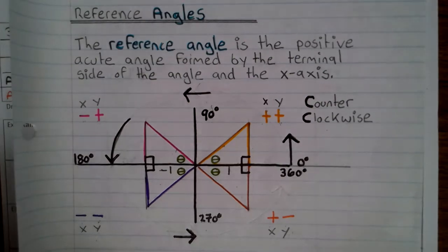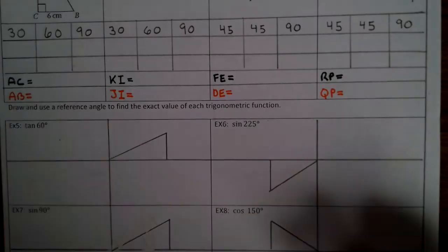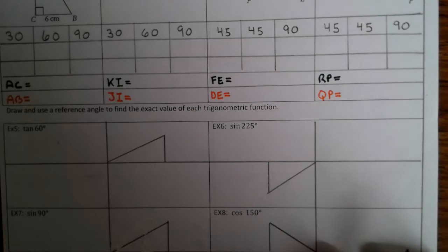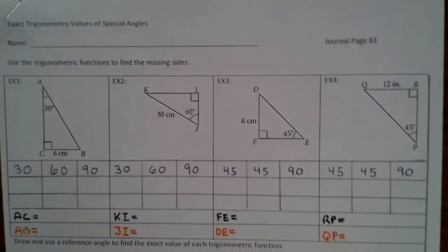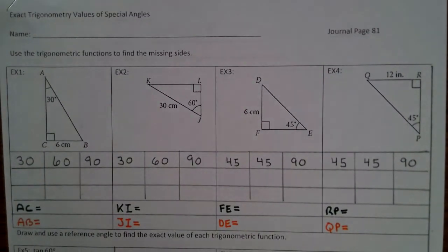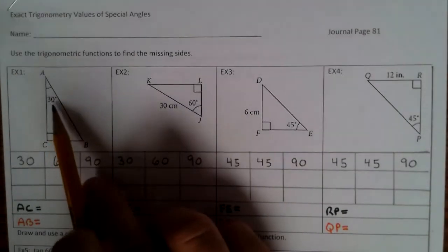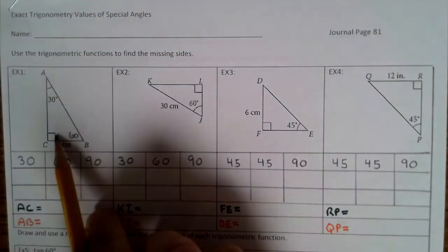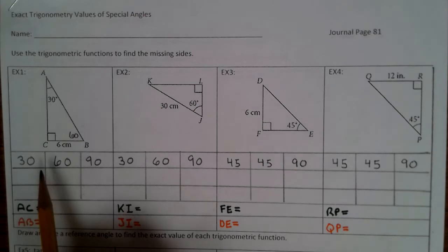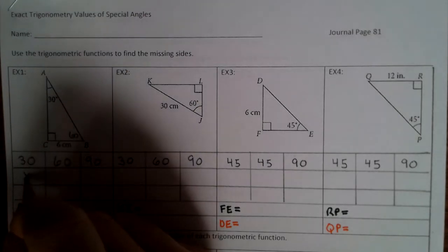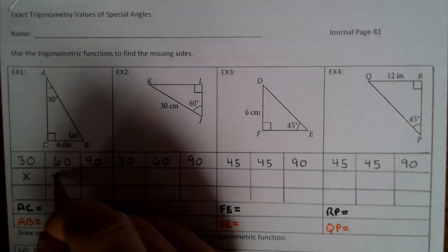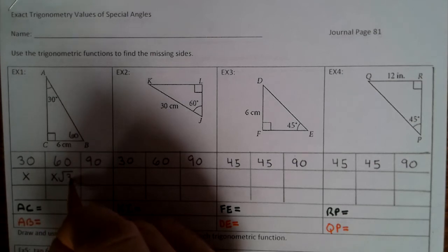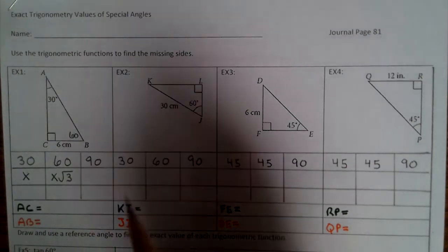Now your notes are completed. Let's take a look at the examples. Use the trigonometric functions to find the missing sides. We see that this is 30 degrees, so this is 30, this is 60, this is 90. We can use our 30-60-90 table: this is x, this is x square root of 3, and this is 2x.